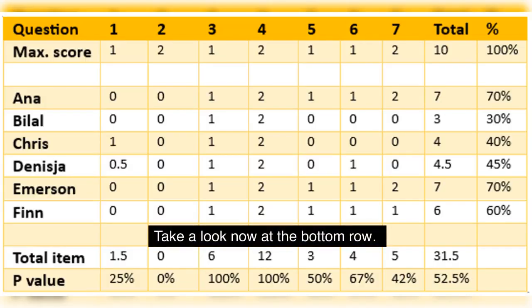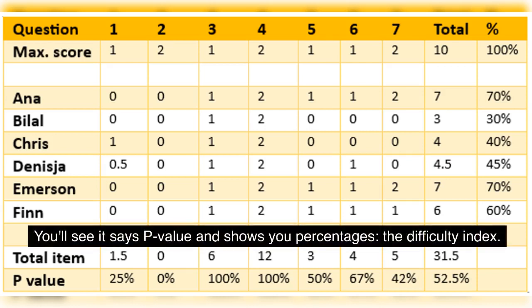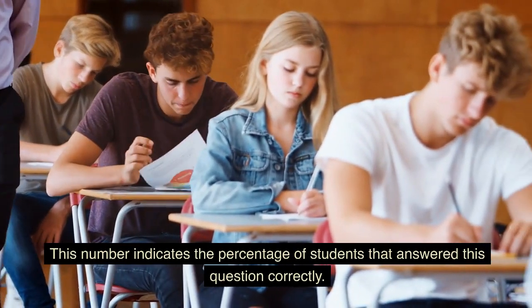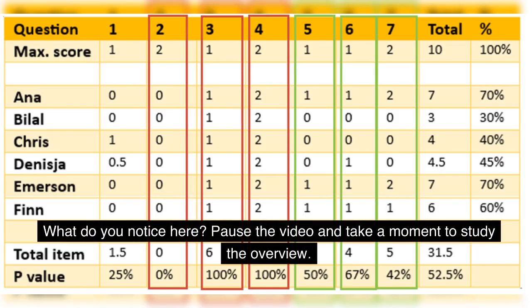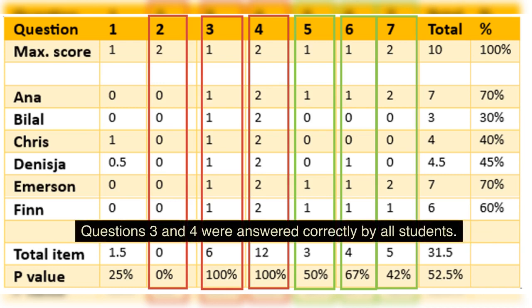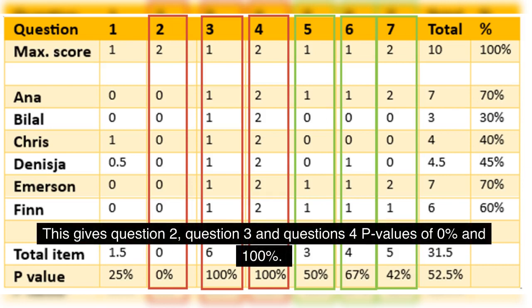Take a look now at the bottom row. You'll see on the bottom left that it says p-value, and the bottom row shows you percentages. This is the difficulty index. The difficulty index indicates the percentage of students that answered this question correctly. You'll notice that question 2 was answered incorrectly by all students. This gives question 2, question 3, and question 4 p-values of 0% and 100%.